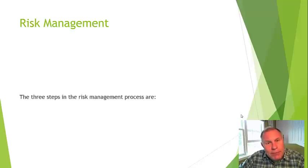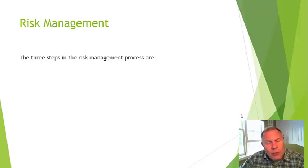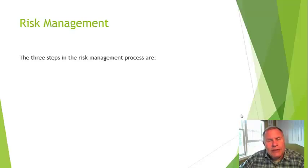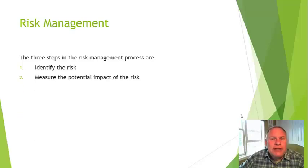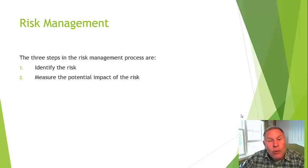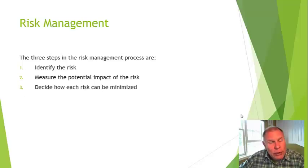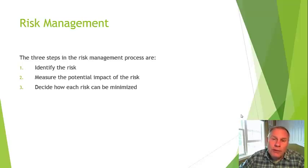There are three steps to the risk management process, and this doesn't matter whether you're an individual or a major corporation — the same process occurs. First, identify the risk. Second, measure the potential impact of the risk if it occurs. Then, decide how you can minimize each risk or protect yourself from it. We're going to walk through a number of situations using this framework: what's the risk, what's the potential impact, and how can it be minimized?